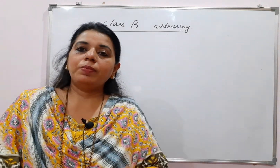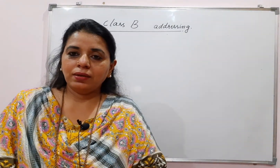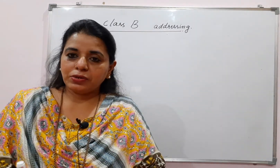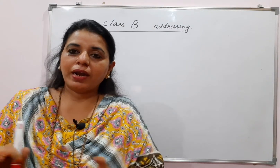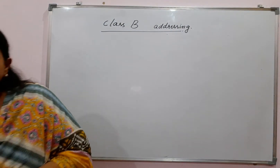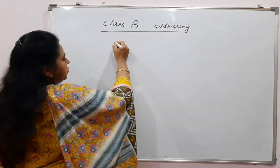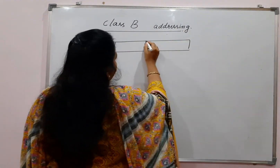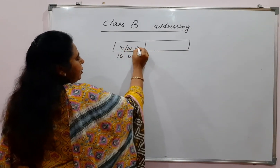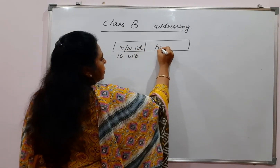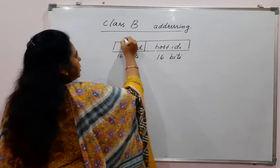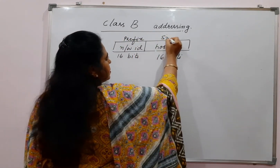In each of these addressing classes, you have to remember that an IPv4 address consists of 32 bits. In Class B addressing, 16 bits are used for the network ID and 16 bits are used for the host ID. This part is called the prefix and the host ID part is called the suffix.